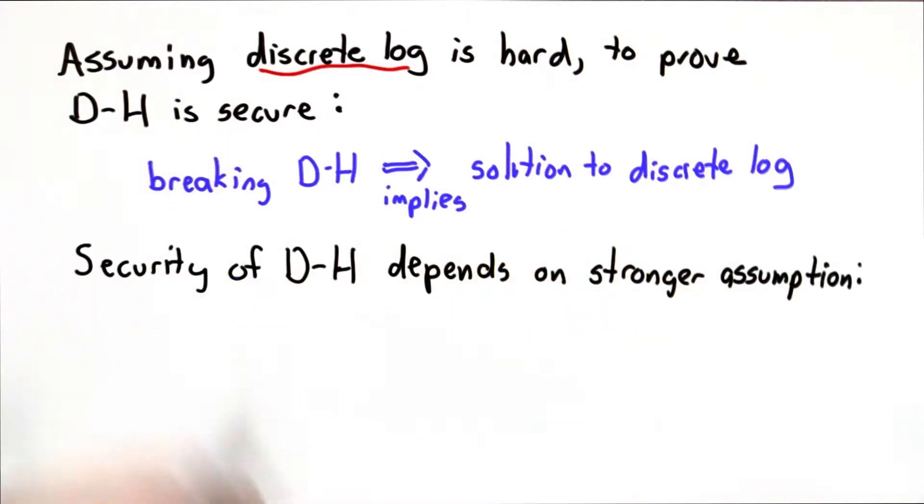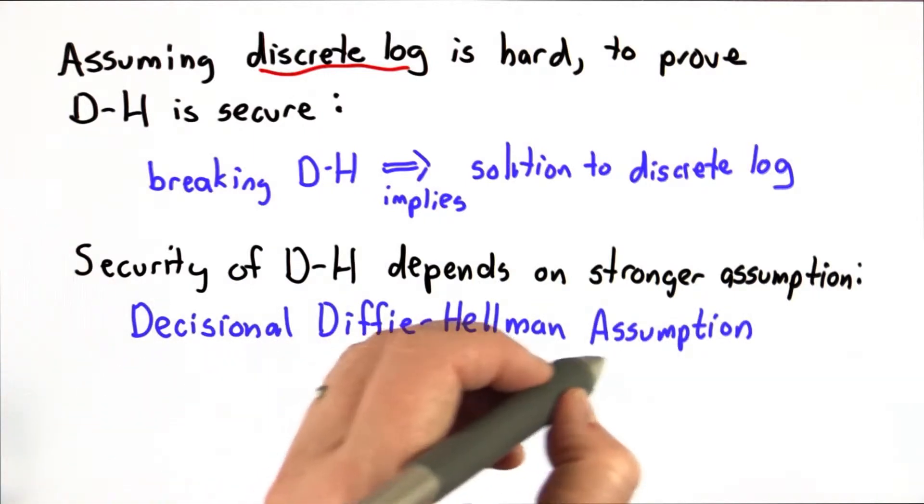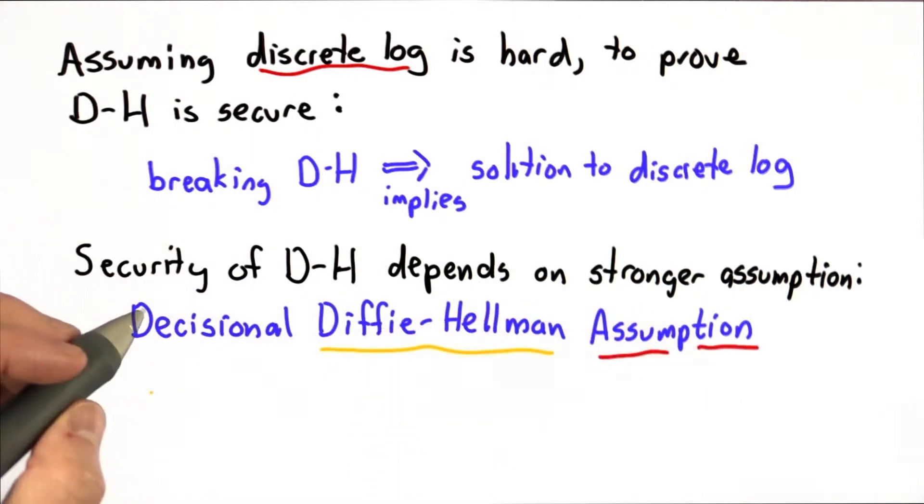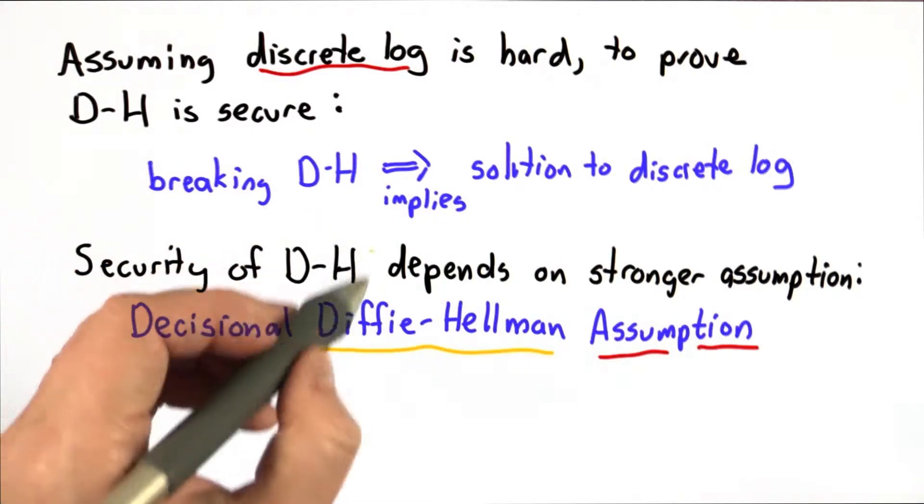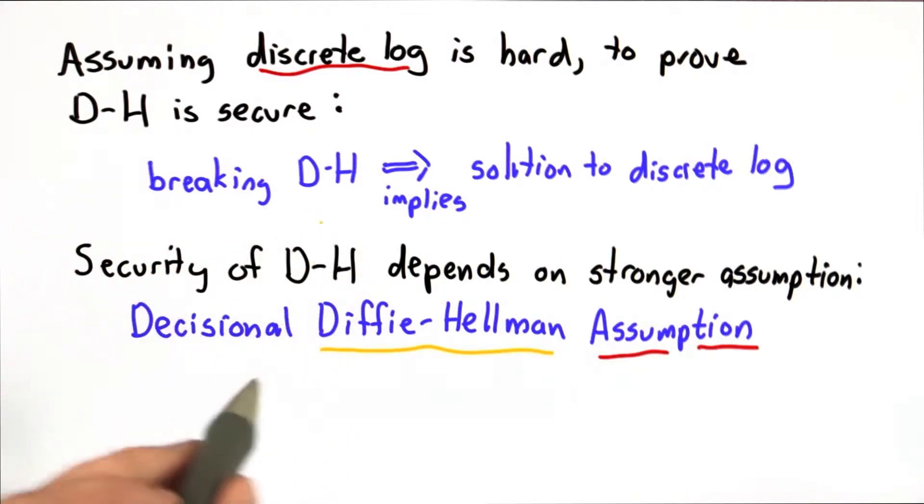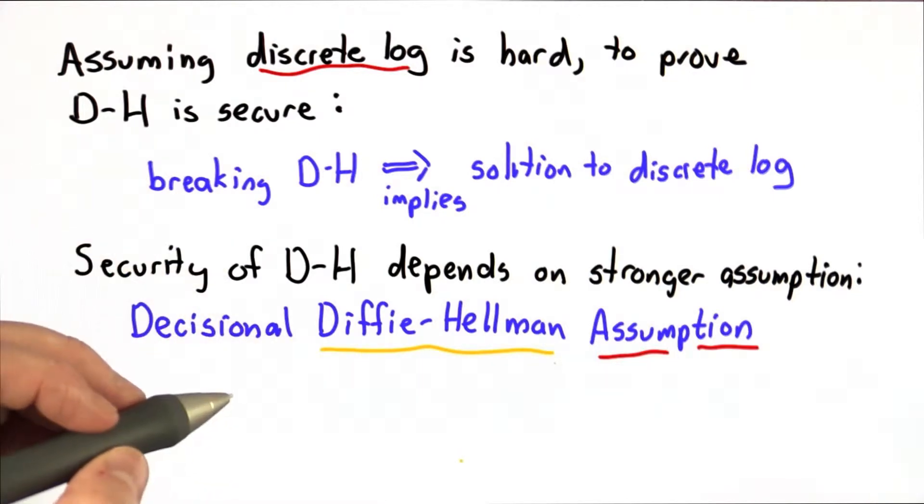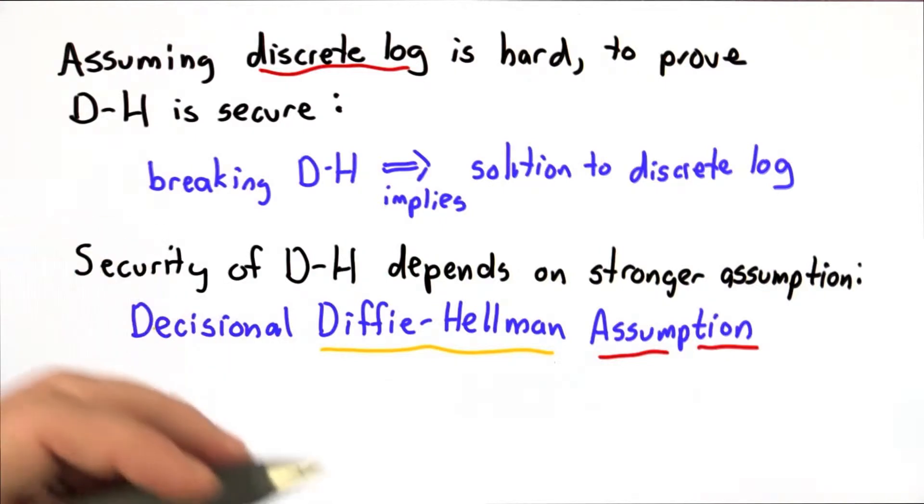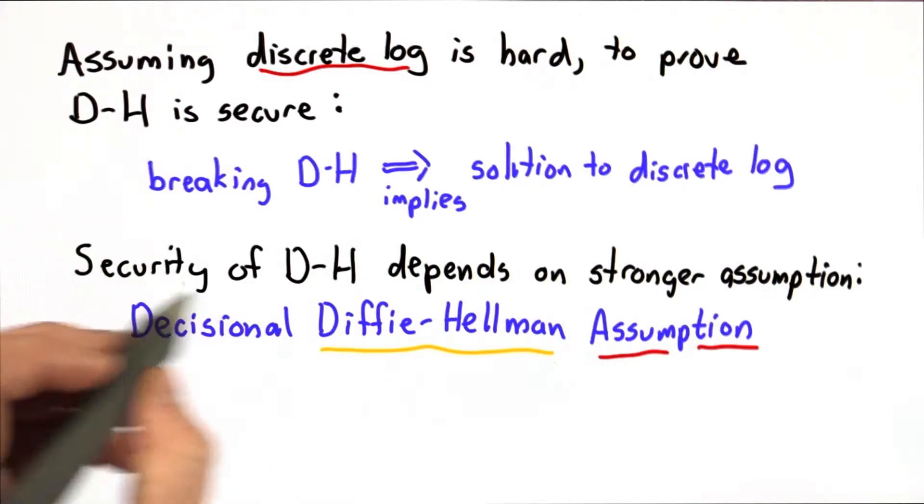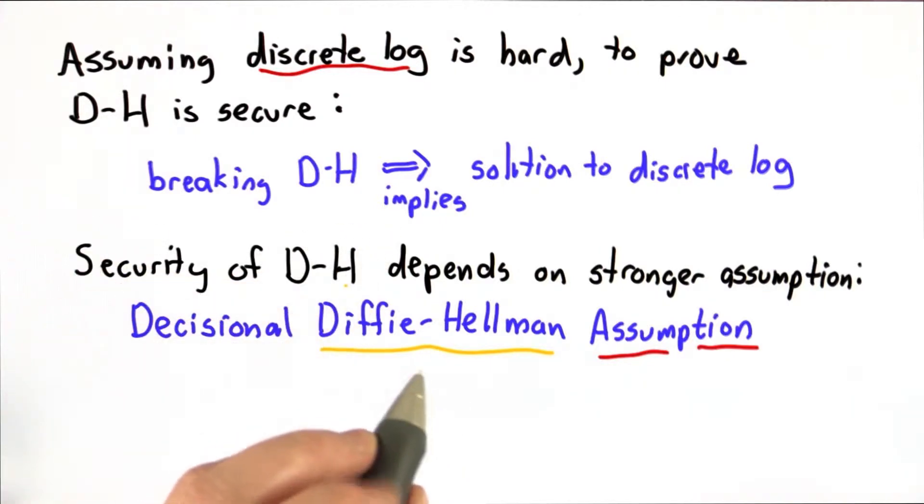Instead, the security of Diffie-Hellman relies on a stronger assumption, what's known as the Decisional Diffie-Hellman assumption. This is a little bit circular, that we're basing the security argument for Diffie-Hellman on an assumption that was invented because this is what Diffie-Hellman relies on. That seems a bit circular, and indeed it is, but it's a useful way of crystallizing what we really rely on to know that the Diffie-Hellman protocol is secure.